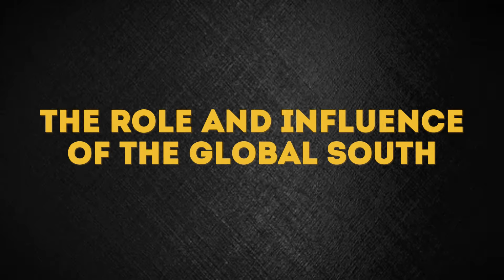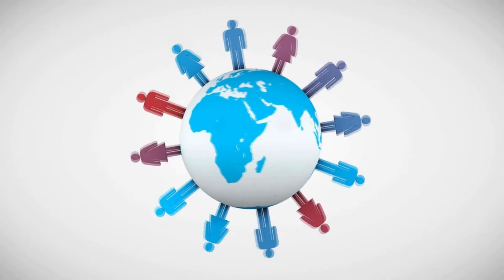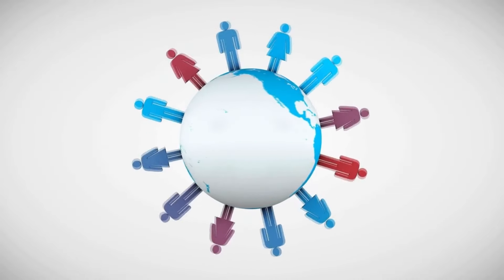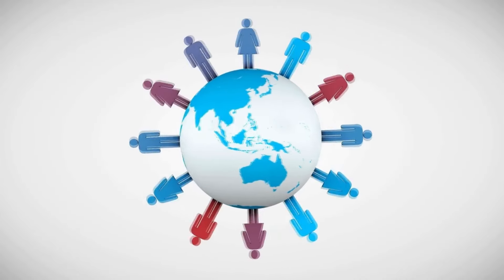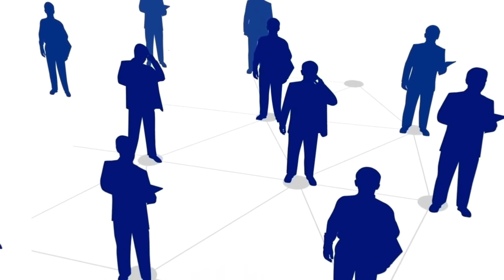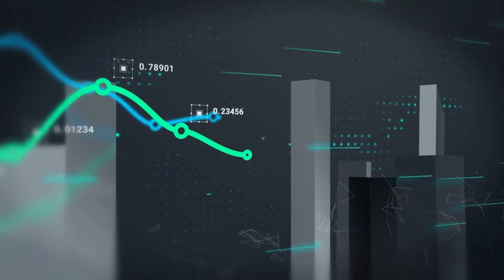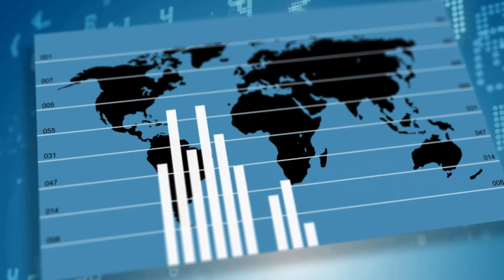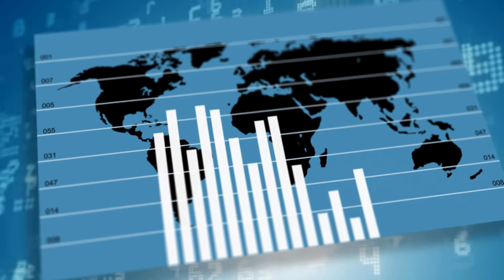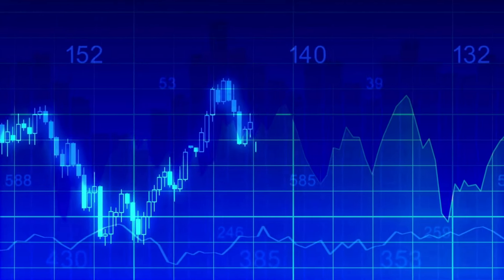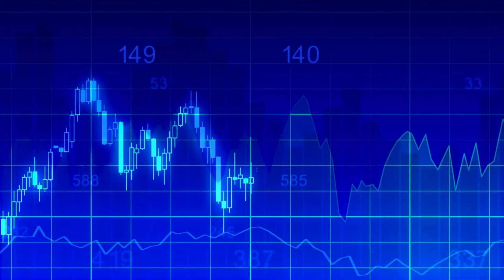The Global South is home to over 6 billion people, with an average life expectancy of 68 years and an average age of around 25 years, compared to the global average of 30 years. This means the population of the Global South is significantly younger. The Global South accounts for more than half of the world's GDP — 53.3% to be exact. Moreover, the Global South is growing economically much faster than the North: over the past decade, 70% of global GDP growth was generated by Global South countries, compared to about 28% from the Global North. The Global South's per capita GDP growth rate is 6%, three times higher than that of the Global North.